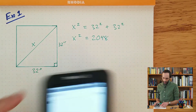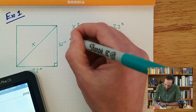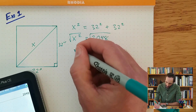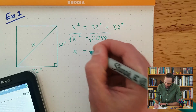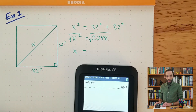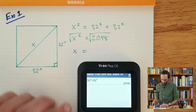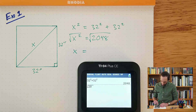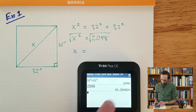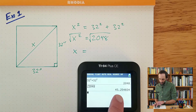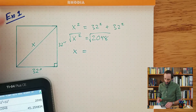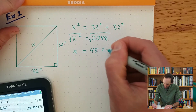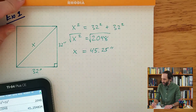Now, in order to solve for x, we can take the square root of both sides. The square root of x squared is just x, and then let's use the calculator to find the square root of 2048. So square root of 2048 — I hit enter and I get 45 and a quarter. So 45.25 inches.